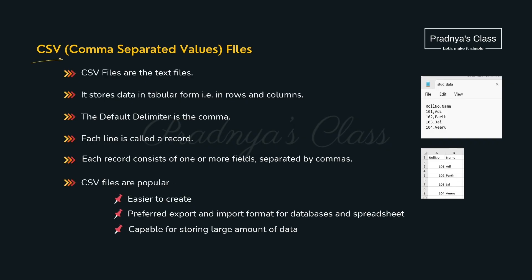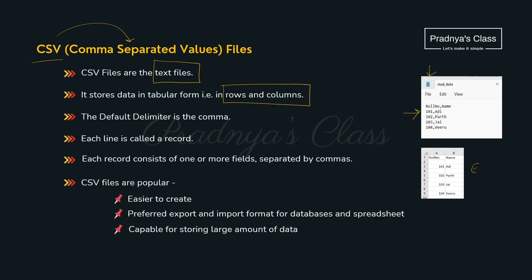Let's understand what a CSV file is. The full form is comma separated values file — keep that in mind because you may get a question based on it. A CSV file is a type of text file, so you can open it in any text editor or even in Excel, and the file data will be in readable format. Generally, file data gets stored in the form of rows and columns. Each row is called a record and each column is called a field. If we look at the file data in a text editor, the fields are separated by comma — that's why the default delimiter is comma.